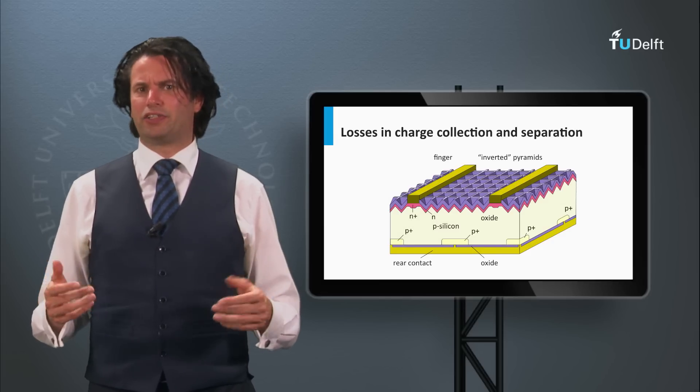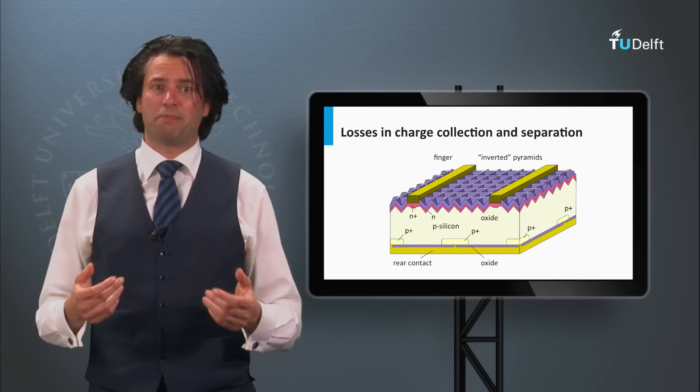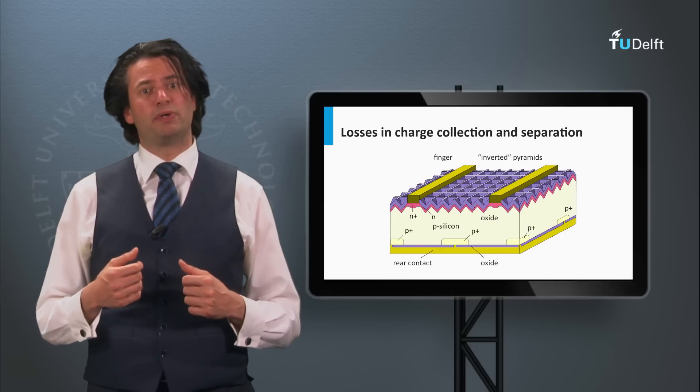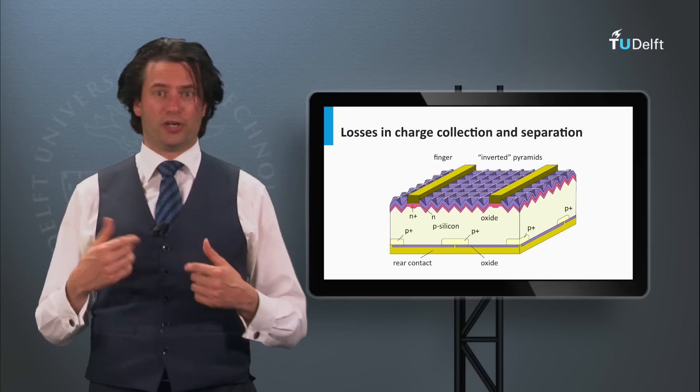Let's start with the first high efficiency crystalline silicon solar cell developed by Martin Green's group at the University of New South Wales in the late 80s and early 90s.